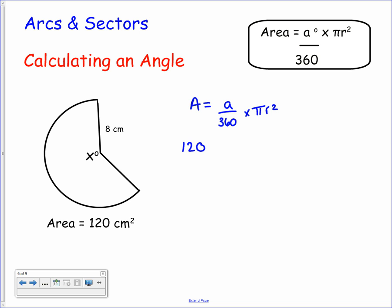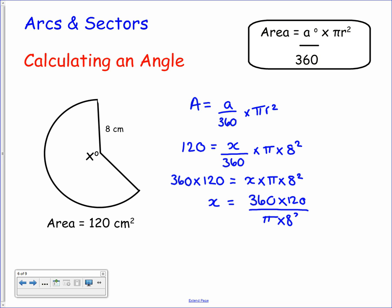We'll start with stating the area formula: a over 360 times pi r squared. Now it's a matter of substituting into the formula and rearranging it. We know the area is 120. The angle we're looking for has been called x, so let's replace a by x. We multiply by pi multiplied by the radius squared, and the radius this time is 8. Now we need to undo everything that's going on next to x to get x on its own. So we first have to divide by pi r squared - we can undo that by multiplying. So we have 360 times 120 over pi times 8 squared.